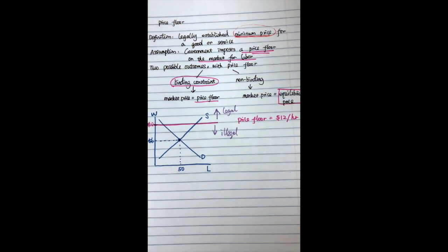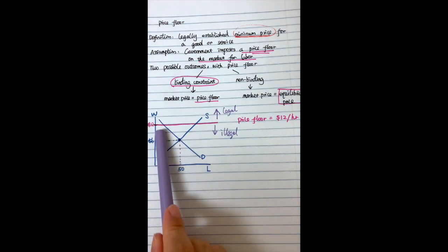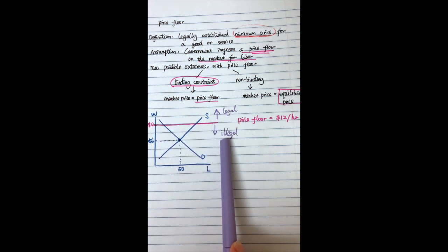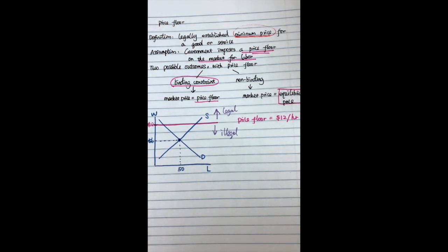For example, in Corvallis, the minimum wage is $11.25. If you apply for a job and the employer offers you $30 per hour, that is definitely legal. However, if the employer can only offer you $10 per hour, that is illegal. So above $12 is legal, and below $12 is illegal. The question is: what is the policy impact on the market?